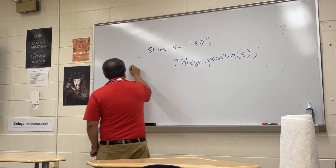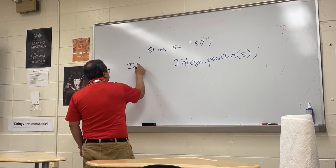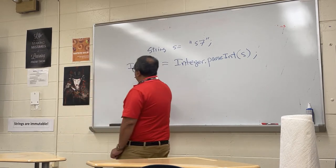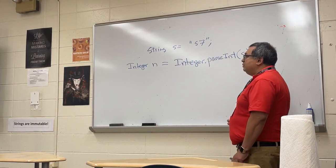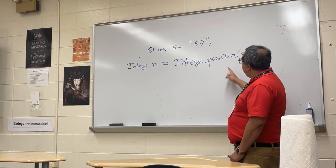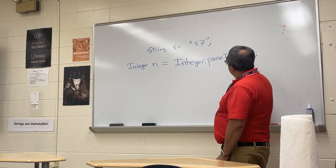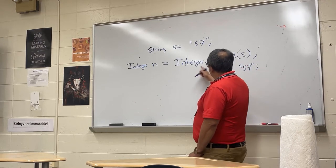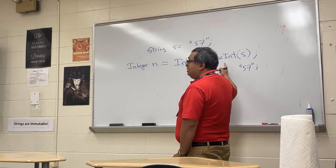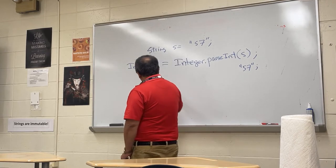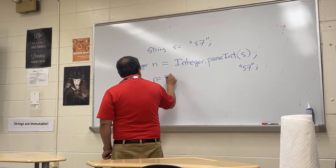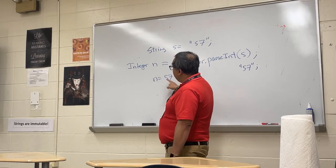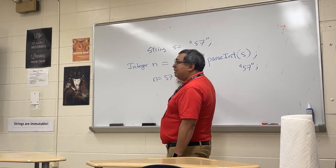You can put Integer.parseInt or even int there — I'll explain that in a minute. Basically, it takes the string, parses it as an integer, and puts the result in n. So n will equal 57; it won't be a string anymore. S will still be a string, but n will now be set to the integer value of that string.